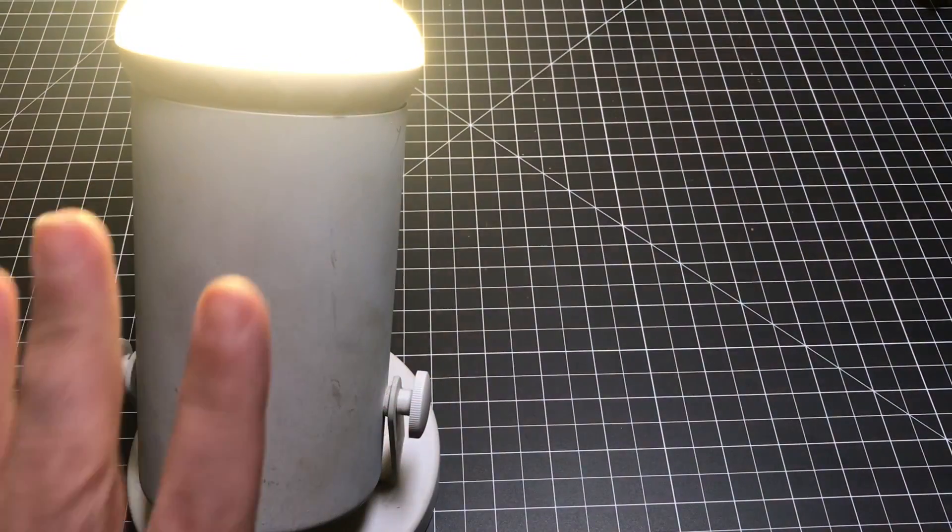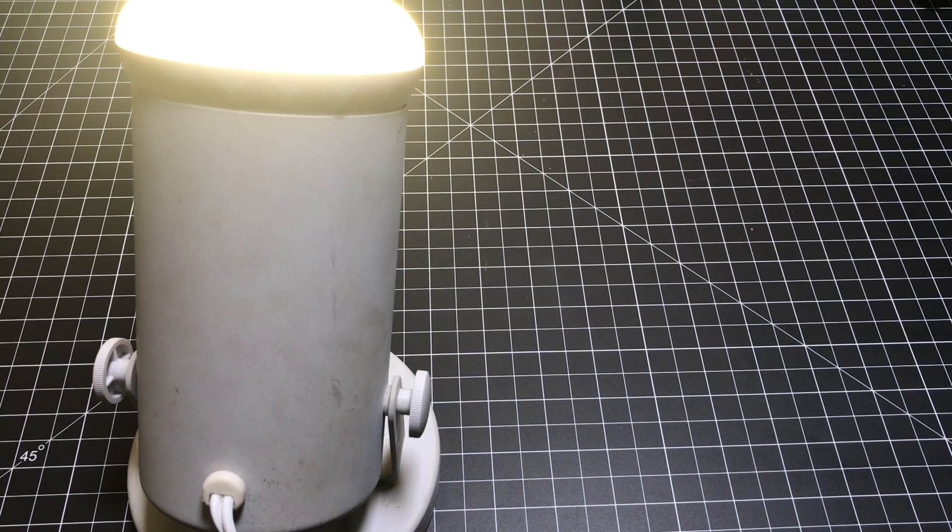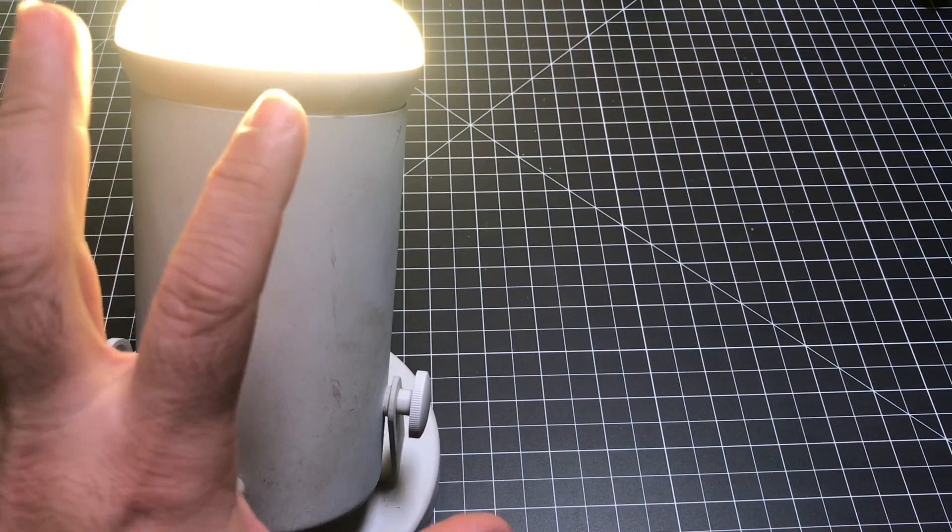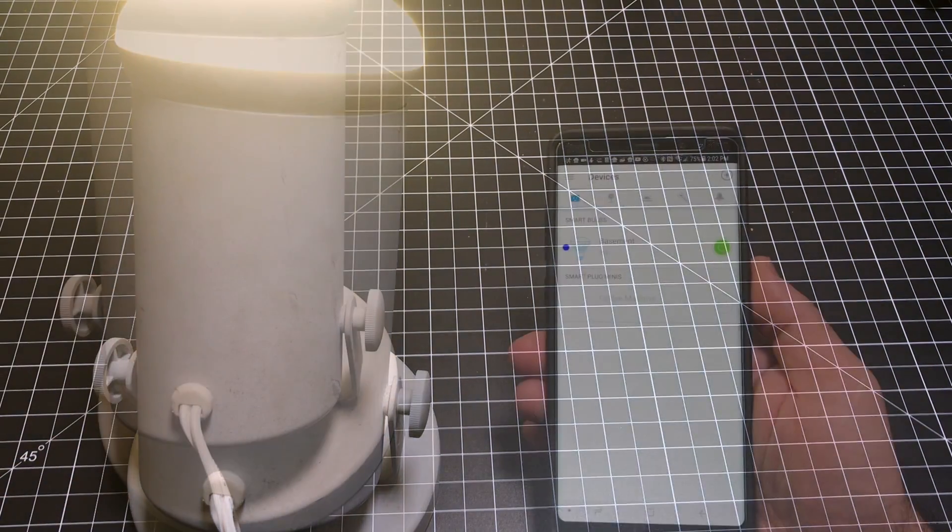Notice the blinking that it's doing, that's indicating that it's in pairing mode. So it started up first, which you saw that bright white that came up. And then the blinking is saying that, okay, I'm ready for setup. Let me show you what it takes to set it up.